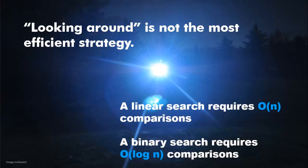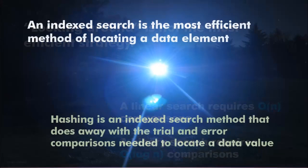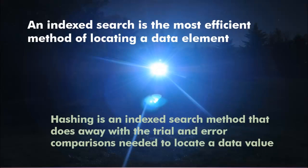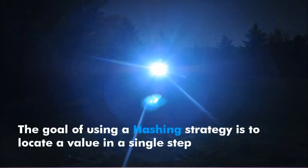Looking around really isn't our most efficient strategy. The Big O efficiency on the linear search is O(N) and the binary search is O(log N). An index search is a much more efficient way of locating a data element, and hashing is the tool that we use to implement that index search. Our goal with any hashing algorithm is to locate a data value within a data set in a single step.